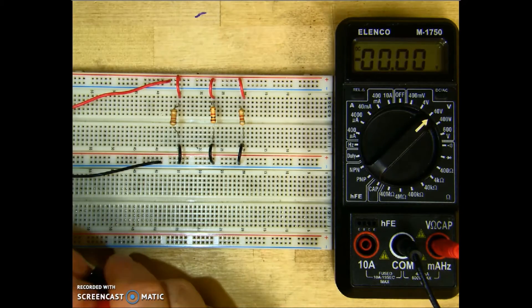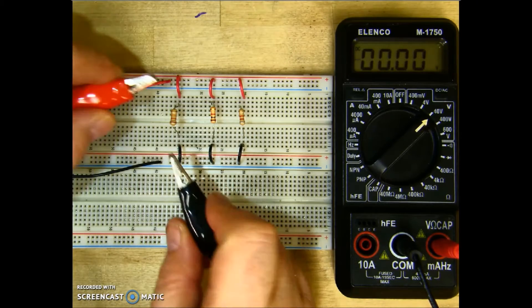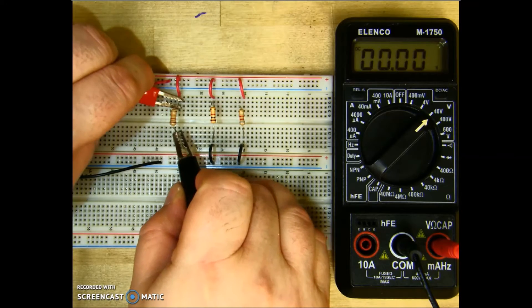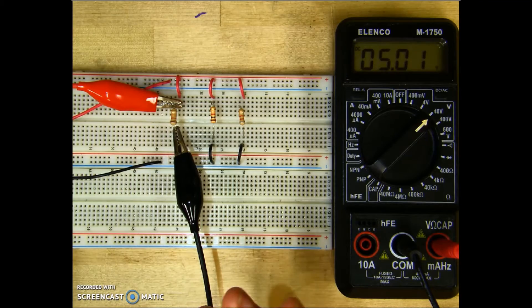And now let's go ahead and measure the voltage across R1. Now remember, in parallel, voltage remains the same. So I should see the same voltage as the source. And I do, 5.0102.